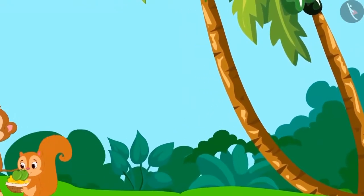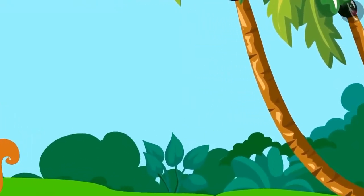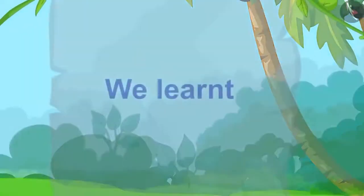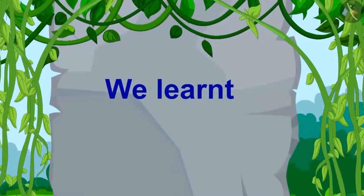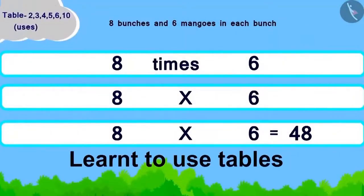Chanda collected the coconuts, gave money to Babban, and both went to rest under a tree. Children, in this lesson we learned to use tables.